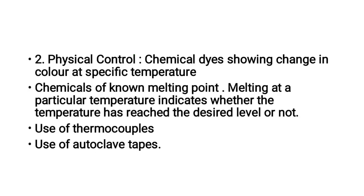Physical control uses chemical dyes that show a change in color at a specific temperature, or chemicals with known melting points that melt at a particular temperature, indicating whether the desired temperature has been reached. Other controls include thermocouples, autoclave tape, and sterilization indicators.